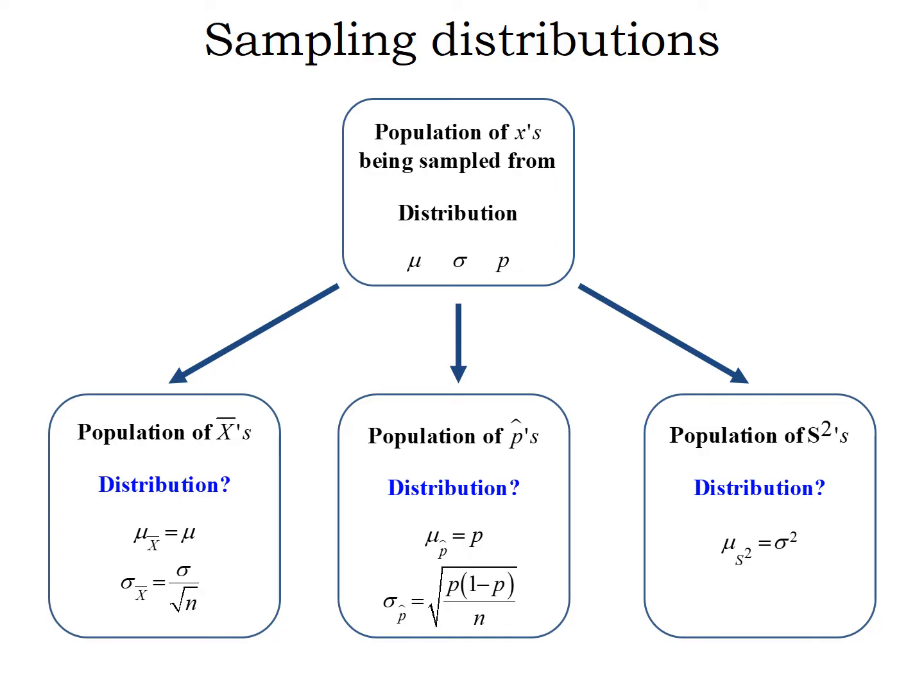Previously, we've talked about the distribution of our sample mean x-bar and how under some circumstances x-bar is normally distributed, under other circumstances it can be approximated with the normal distribution, and sometimes it's not even approximately normal. We've talked about p-hat, how depending on the circumstances we may or may not be able to approximate p-hat with a normal distribution.